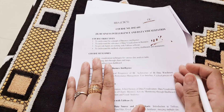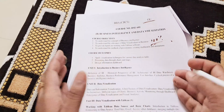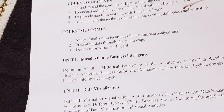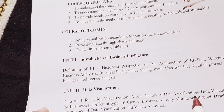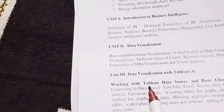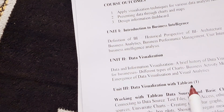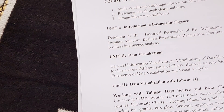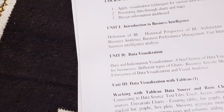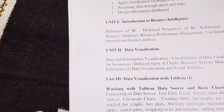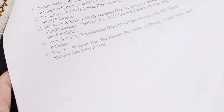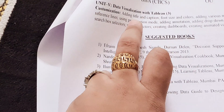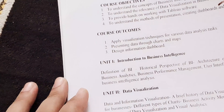Please don't skip this video — try to watch till the end and inshallah it will cover 100 percent pass marks. We have five units in Business Intelligence and Data Visualization. Unit one is Introduction to Business Intelligence, unit two is Data Visualization, unit three is Data Visualization with W1, unit four with W2, and unit five is Data Visualization with W3.